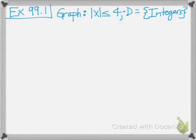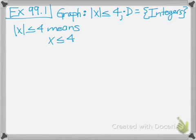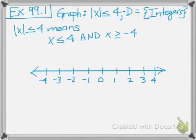Let's do an example: graph the absolute value of x is less than or equal to 4, and your domain is the integers. The absolute value of x ≤ 4 means we have all values of x that are less than or equal to 4 and all values of x that are greater than or equal to negative 4. When we graph this on a number line, we fill in all integers less than or equal to 4 and greater than or equal to negative 4.